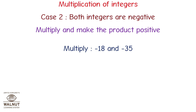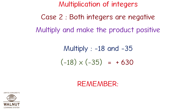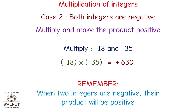Multiply minus 18 and minus 35. Minus 18 multiplied by minus 35 is equal to plus 630. We multiply the numbers directly and get the answer. Since both numbers are negative, the product becomes positive. Remember, when two integers are negative, their product will be positive.